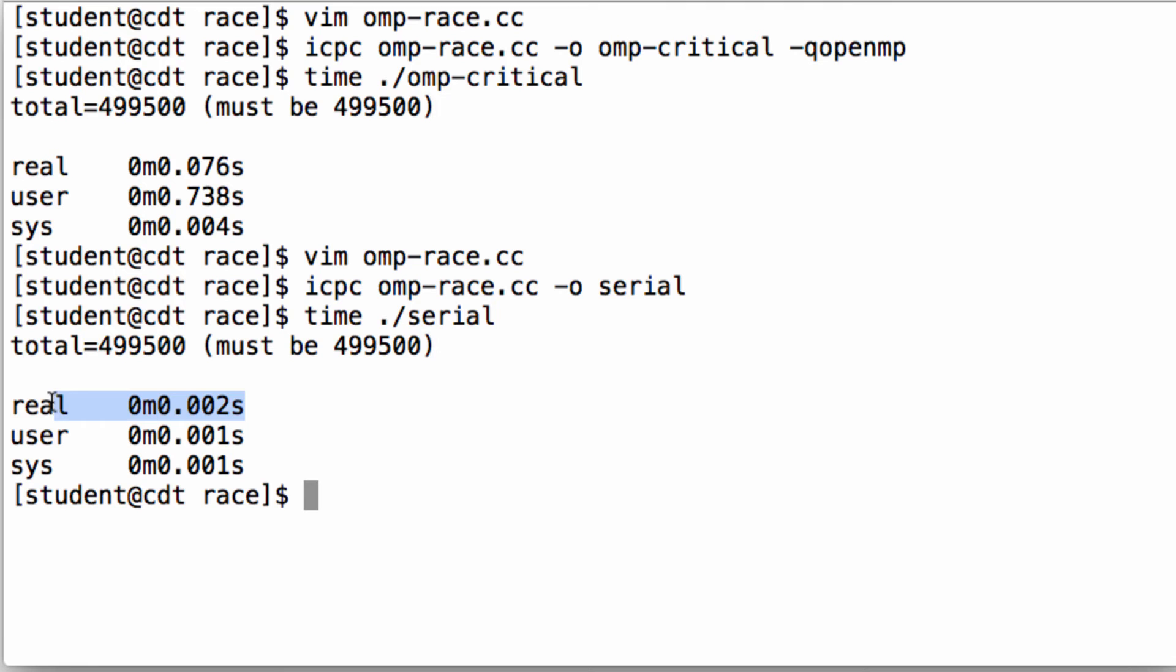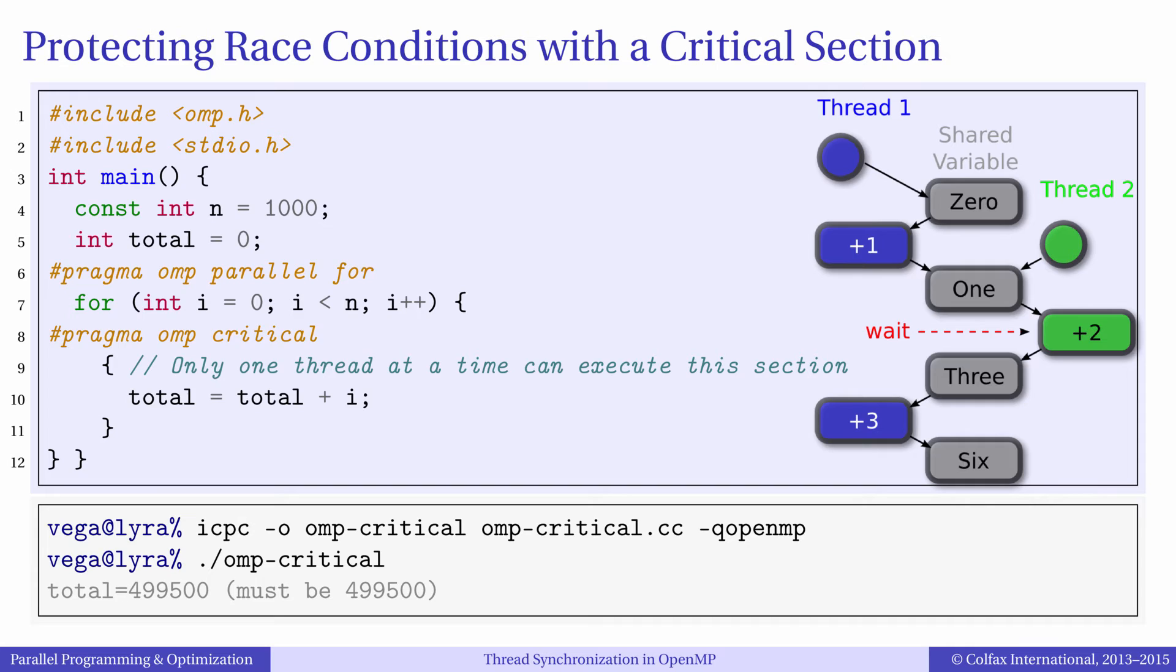Using a critical section is obviously overkill for this code. However, in other situations critical sections may be justified, especially when they are not used inside the innermost loop.